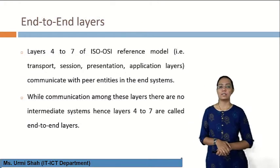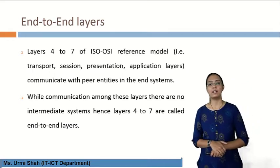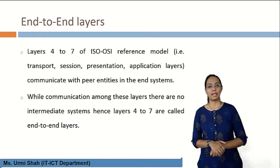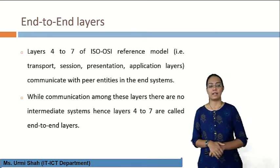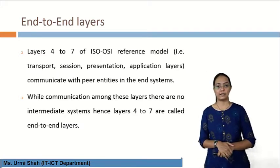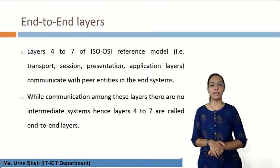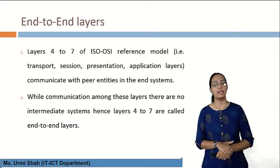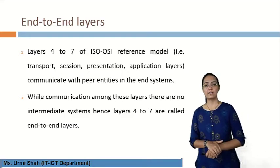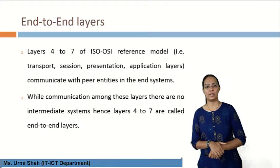The first topic is the end-to-end layer. Basically, layers 4 to 7 of the ISO/OSI reference model represent four different types of layers: transport, session, presentation, and application layer. These four communication layers are used to communicate with peer entities in the end system. That's why they are included as part of the end-to-end layer. While communicating among these layers there are no intermediate systems, hence layers 4 to 7 are called end-to-end layers.